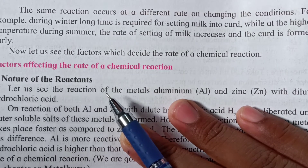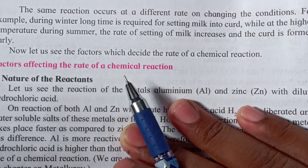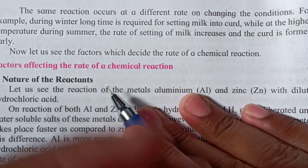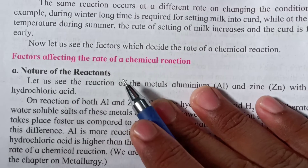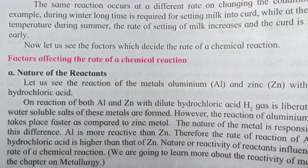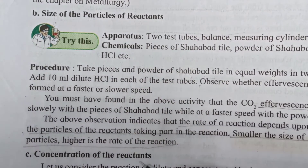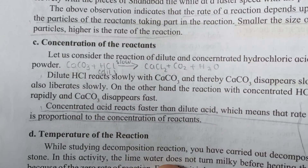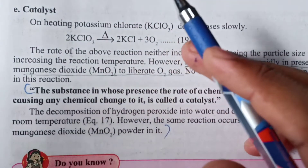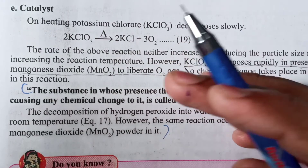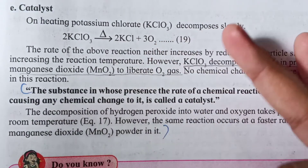For example, during winter a long time is required for setting milk into curd, while at higher temperatures during summer the rate increases and curd is formed earlier. The factors which decide the rate of chemical reaction are: nature of reactants, size of the particles of reactants, concentration of reactants, temperature of the reaction, and catalyst. We will learn more about these factors in the next lecture.